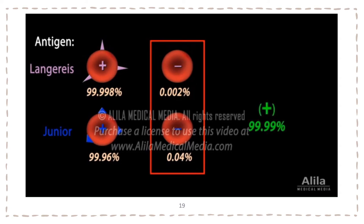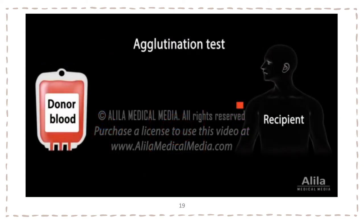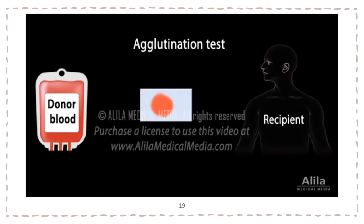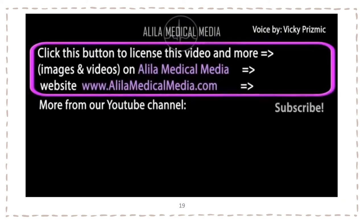For example, if 99.99% of a population is positive for a certain antigen and only 0.01% is negative, only that tiny fraction of negative patients is at risk. To account for possible incompatibility outside ABO and RH, an additional crossmatch test is usually made before a transfusion. A blood sample from the patient is mixed with a sample of donor blood. The mixture is examined for clumps — no clumping means a compatible match.